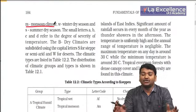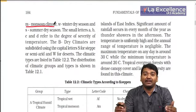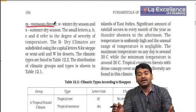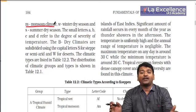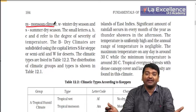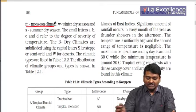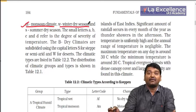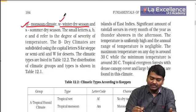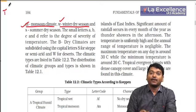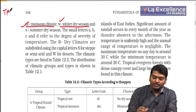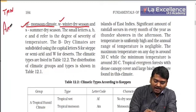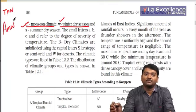M means monsoon type of climate — you get rainfall in summer, whether in India, Southeast Asia, ASEAN countries, or China. India gets summer monsoon rainfall and has dry winters, so we combine tropical, monsoon, and winter dry. W means winter dry season, and S means summer dry season.